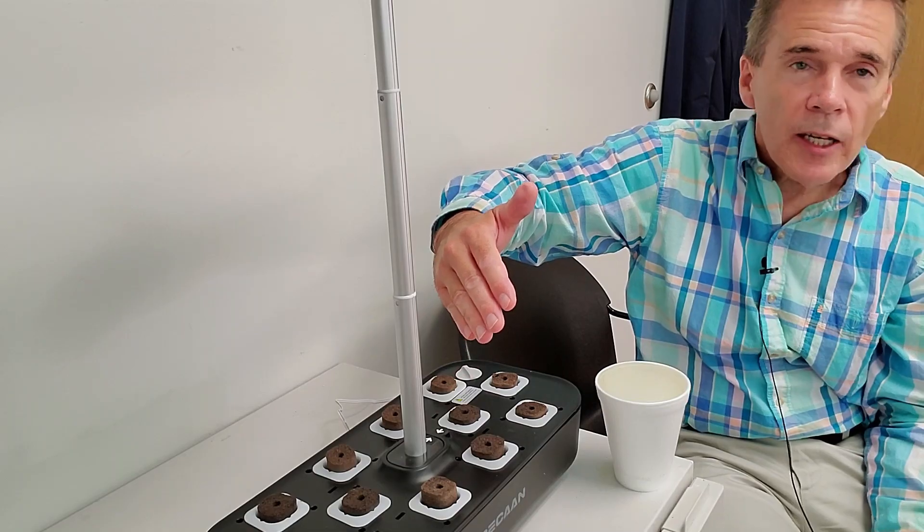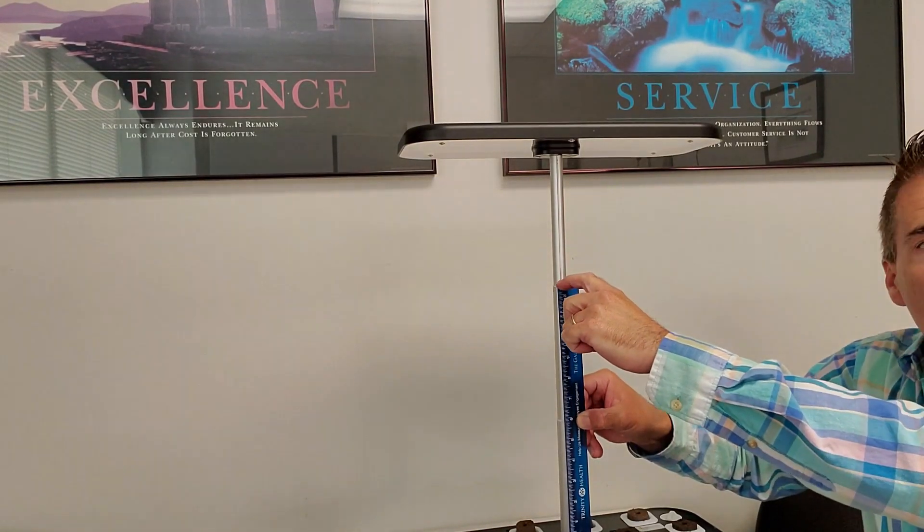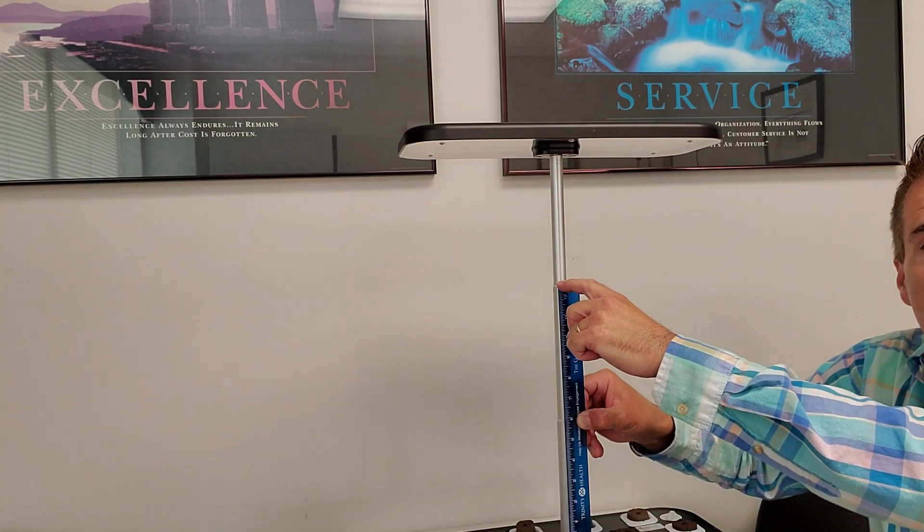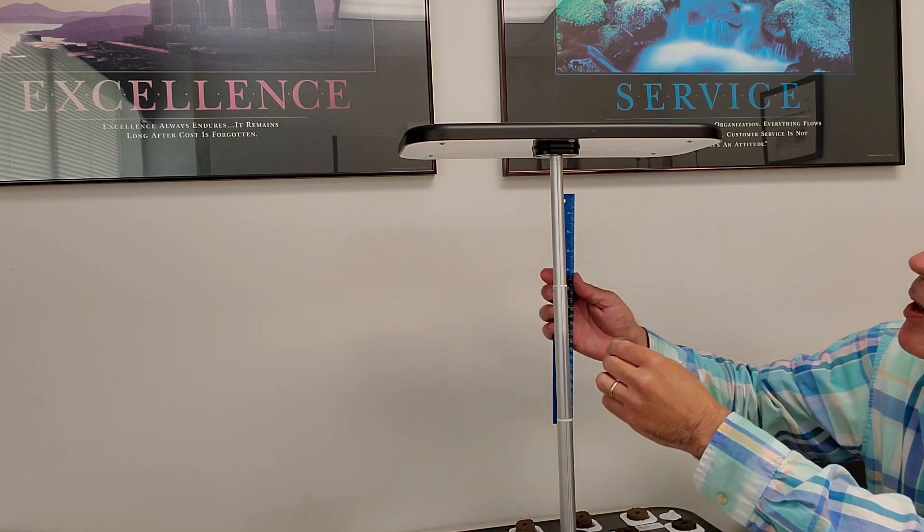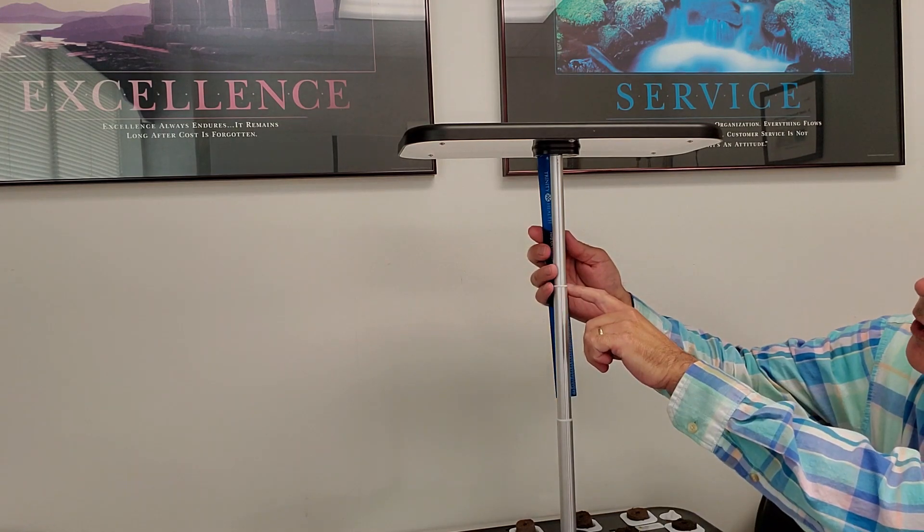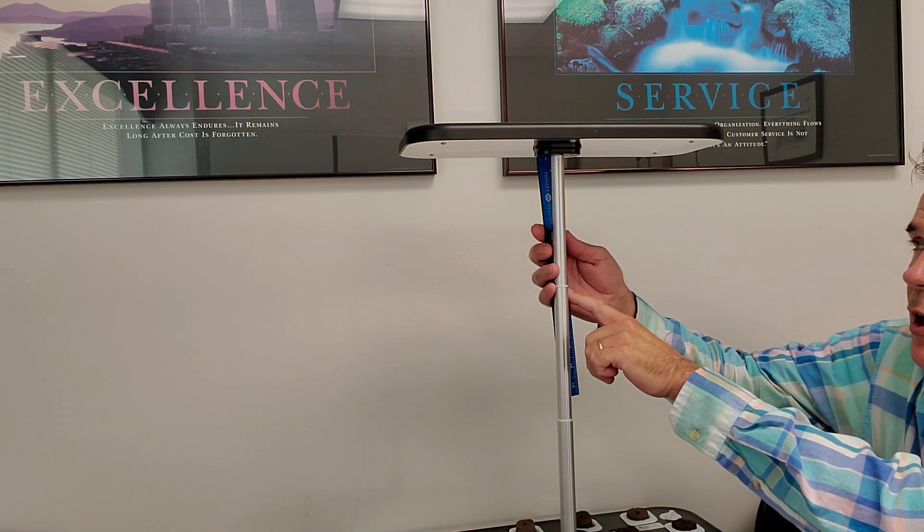So you're looking at the typical 12 inches of height on competitive products. It comes up to about the second rod on the height of the LED light. So if we were to measure down, we have another at least 6½ inches that comes down from the light.